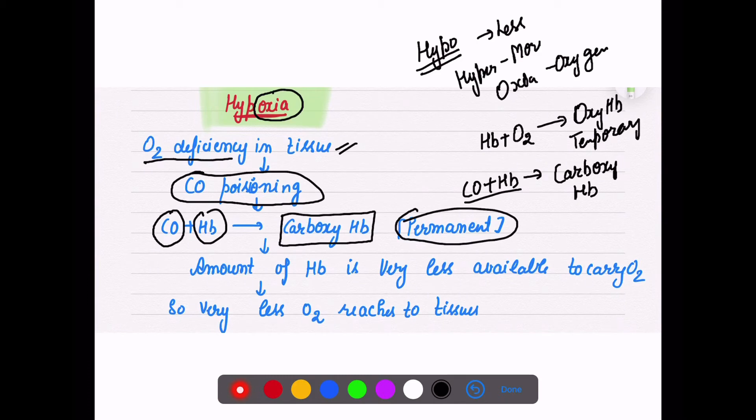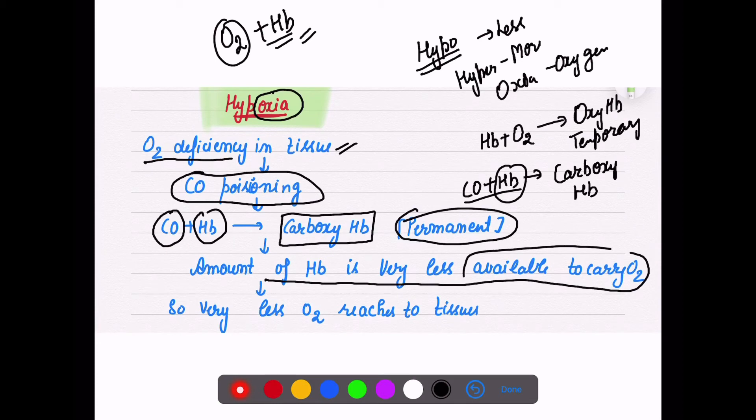But now when you are inhaling air having more amount of carbon monoxide, few hemoglobin molecules combine with carbon monoxide and form carboxy hemoglobin complex. The major drawback is that this complex is permanent - it means it will not release hemoglobin. So oxygen has less capacity to combine because hemoglobin availability is reduced.